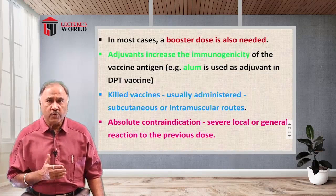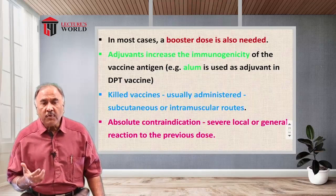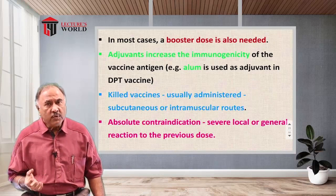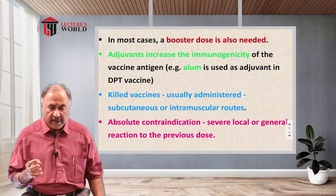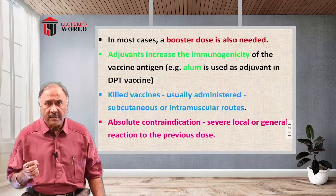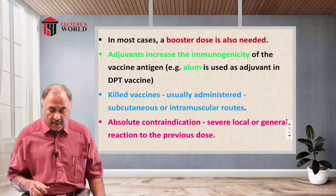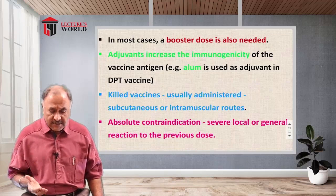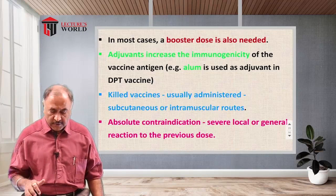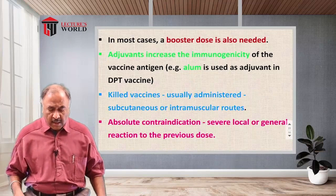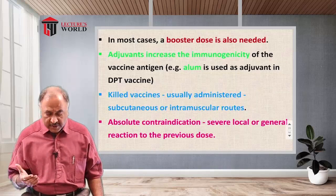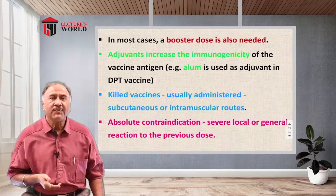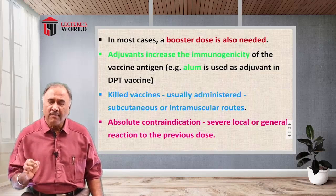The use of adjuvants increases the immunogenicity of the antigens. For example, alum is used as an adjuvant in DPT — diphtheria, pertussis and tetanus. These killed vaccines are normally administered subcutaneously or through intramuscular routes. One absolute contraindication is that severe local or general reactions to the first doses have been found to occur in a few cases.